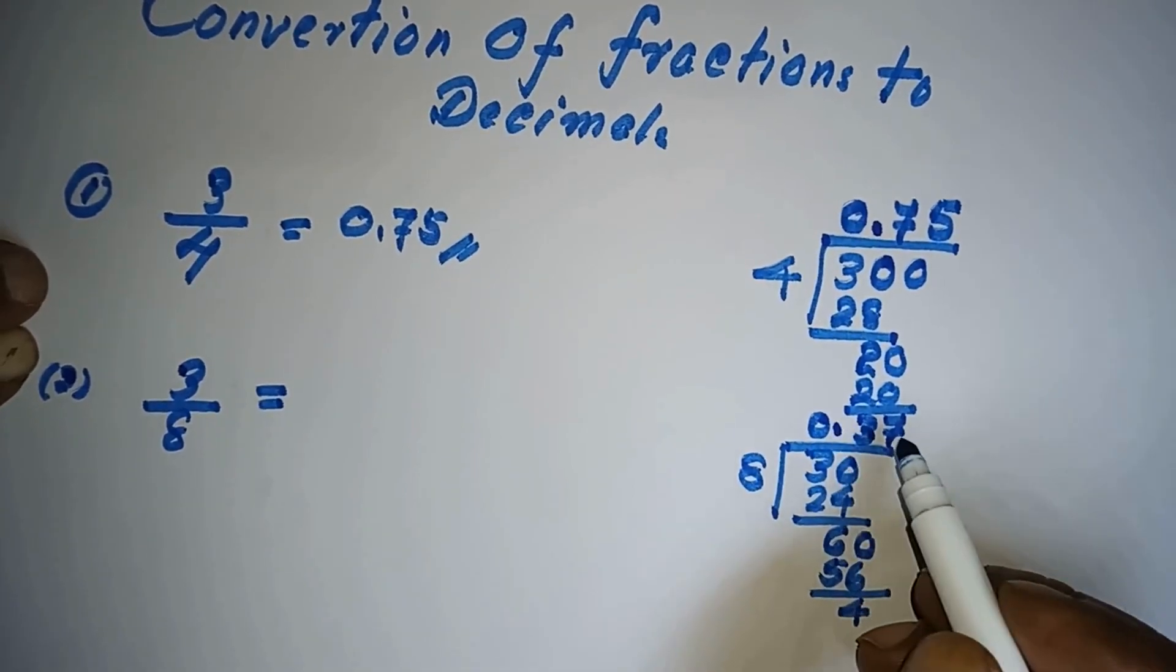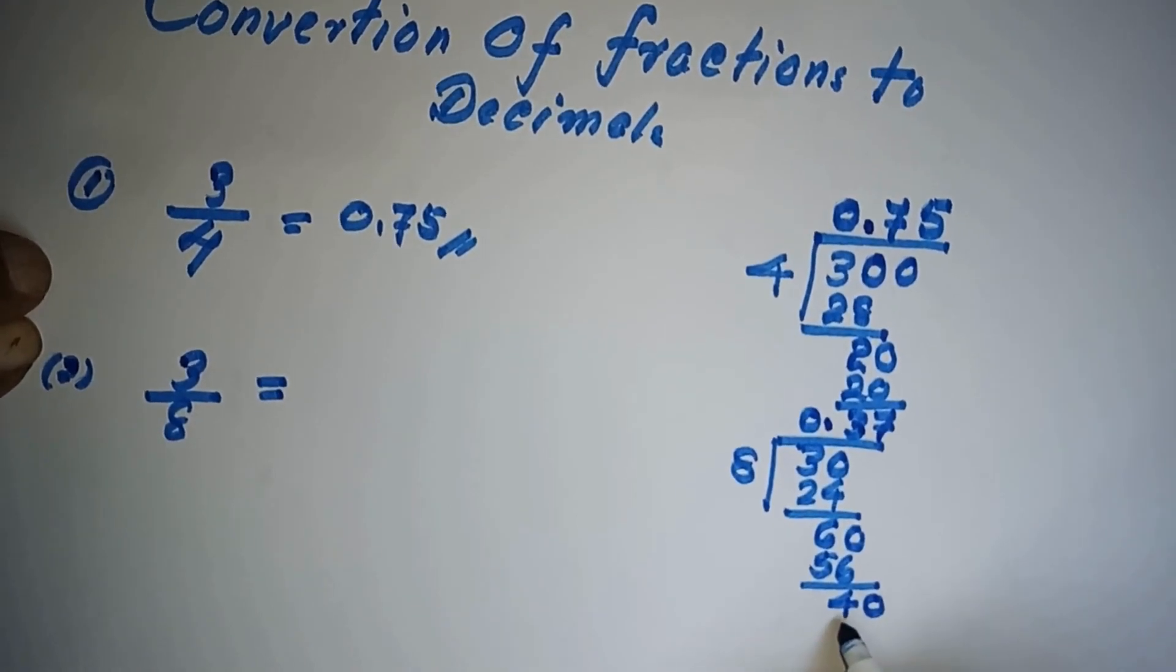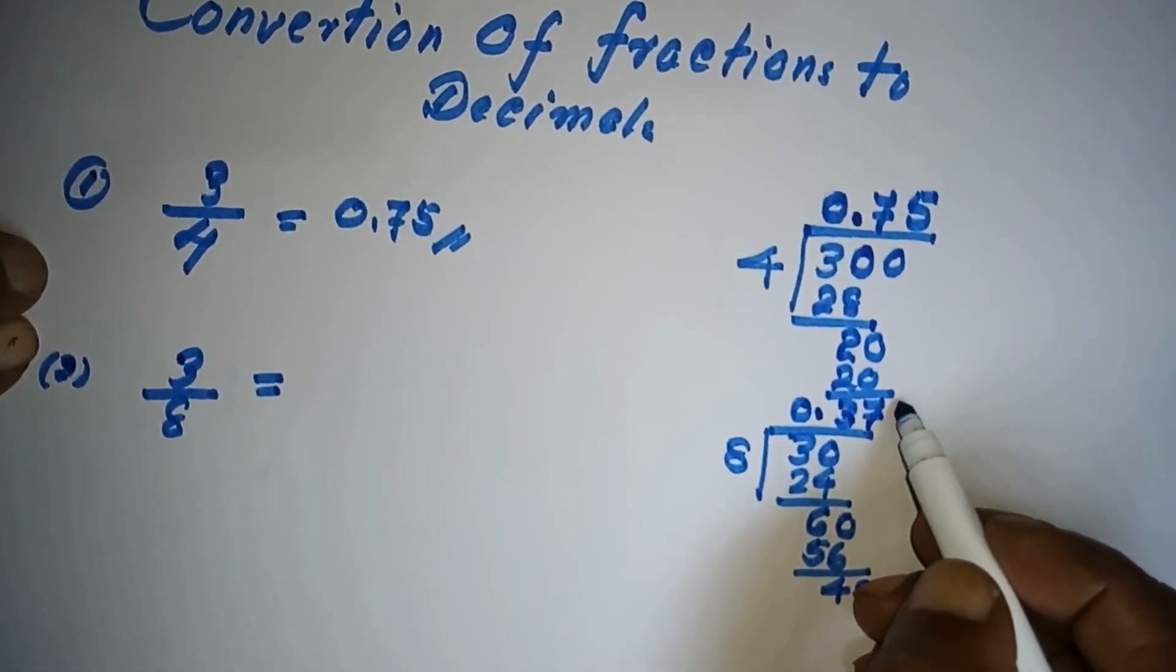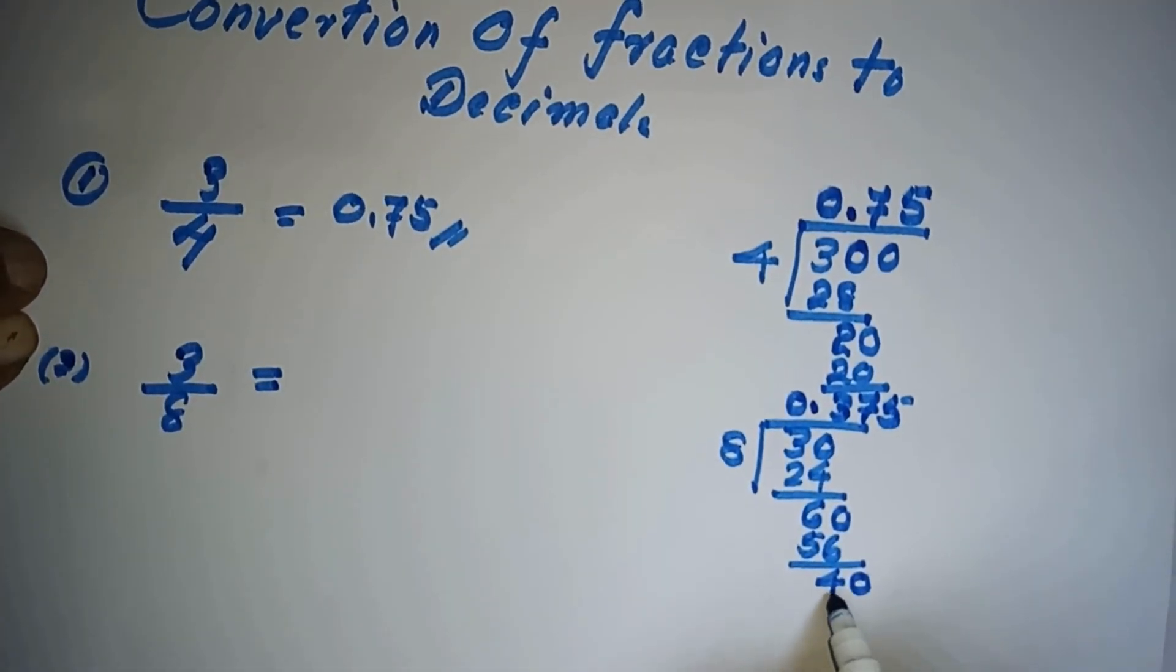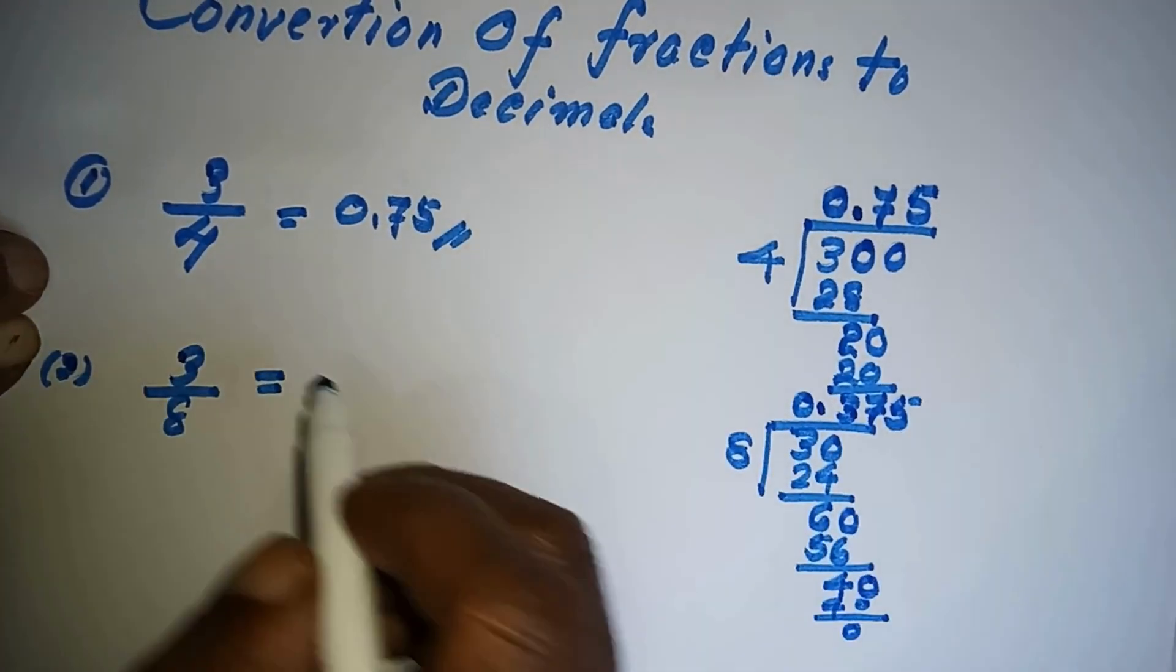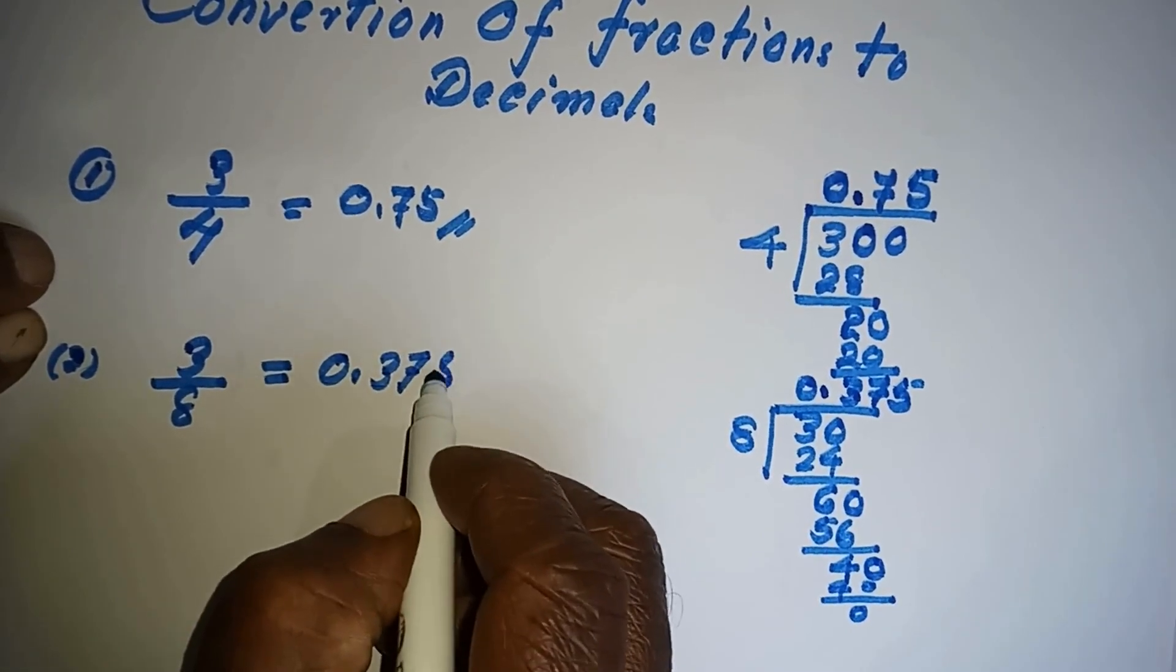If we want to continue further, we have to take another 0 here. Now see how many 8's are there for 40, it is exactly 5. 8 times 5 is 40, now 0 balance. The answer is 0.375.